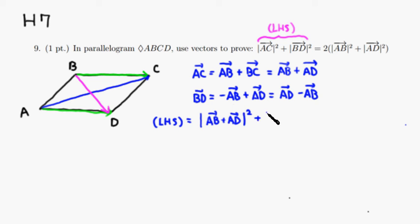plus norm of BD, which is the same thing as AD minus AB squared.